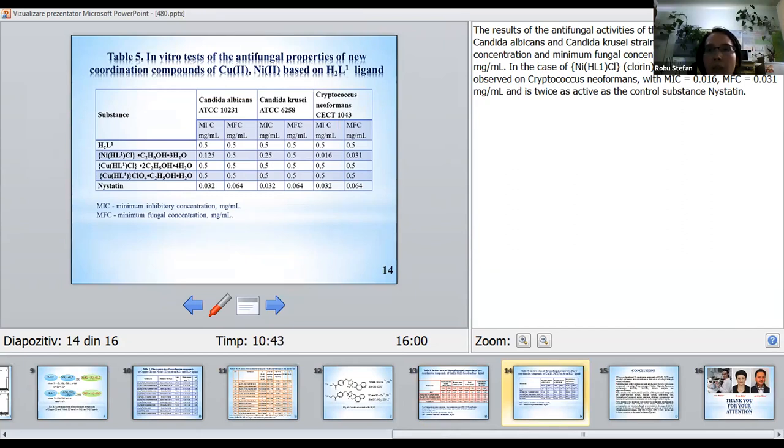In the case of Nickel-HL1-chlorine complex, a selectivity is observed on Cryptococcus neoformans with MIC equal to 0.016, MFC equal to 0.031 milligrams per milliliter, and is twice as active as the control substance Nystatin.